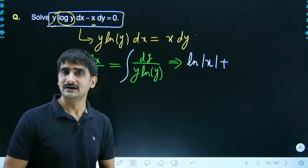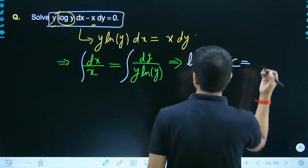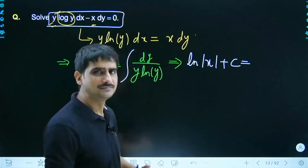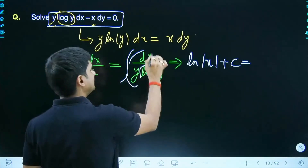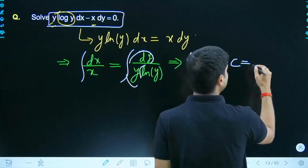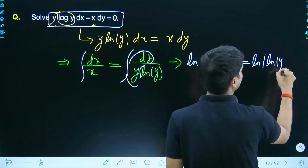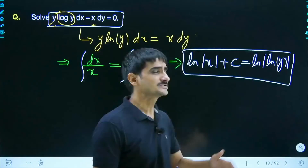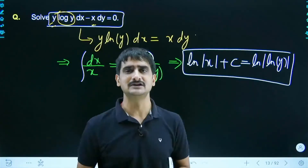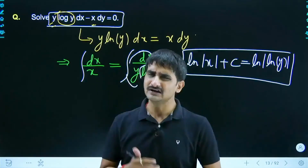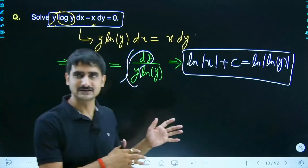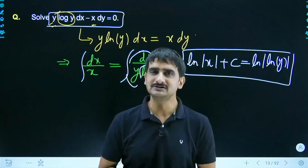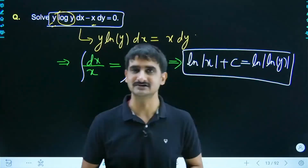Integrating: the left side gives ln|x|. For the right side, integral of 1/(y ln y), substitute ln y = t, so dt = (1/y)dy. This gives integral of dt/t = ln|t| = ln|ln y|. So the general solution is ln|x| = ln|ln y| + C. You can simplify further using log properties — ln a − ln b = ln(a/b).